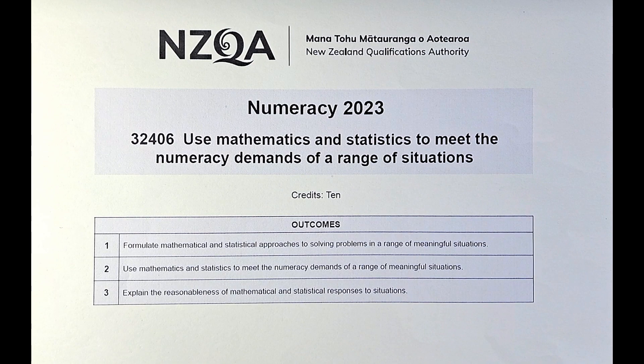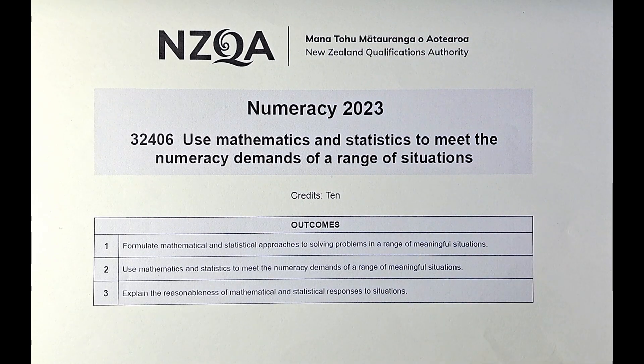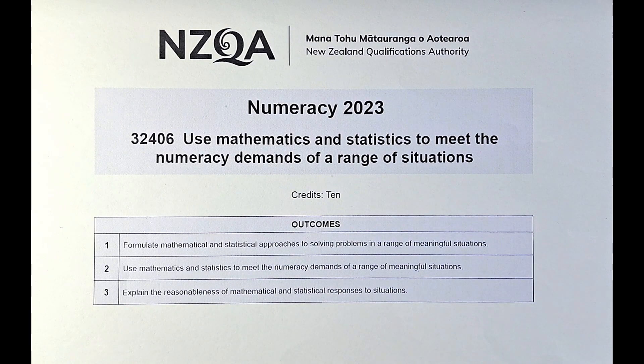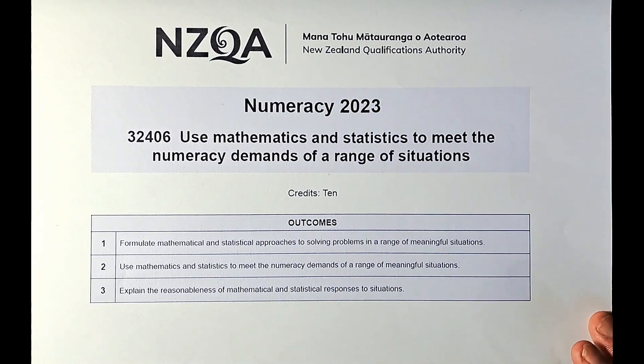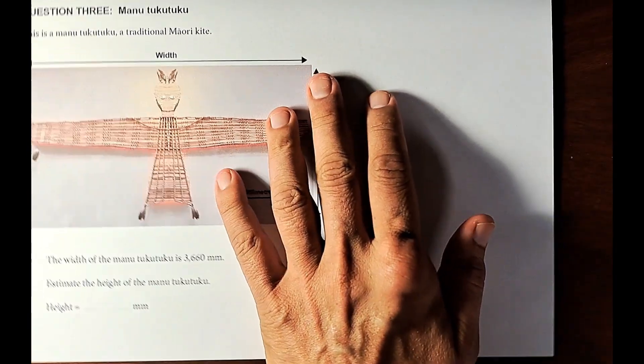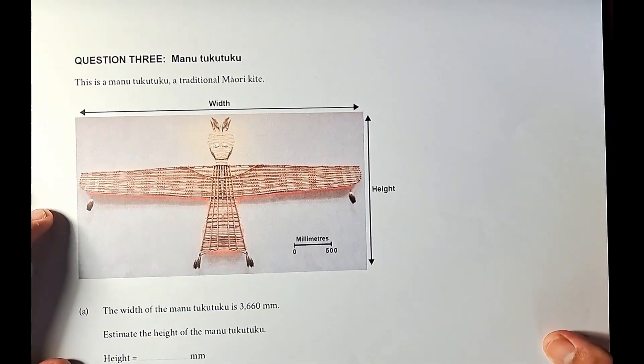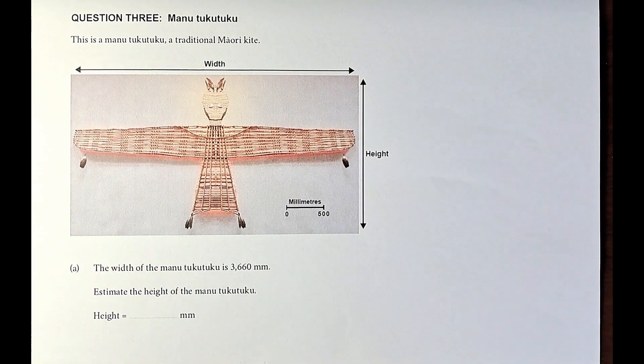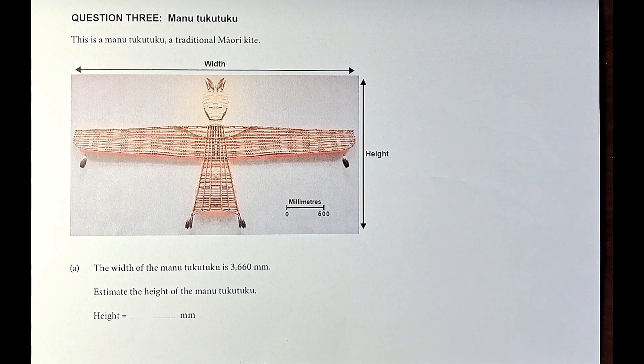So without further ado, we will do question 3, whole question 3, part 1, part 2 and part 3 in this video. We will start with part 1. Let's read the question together. This is a Manu Tuku Tuku, a traditional Maori kite.